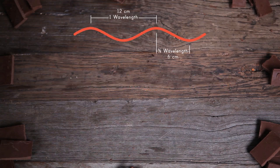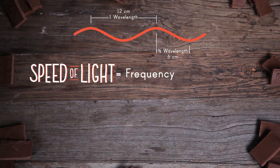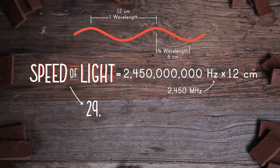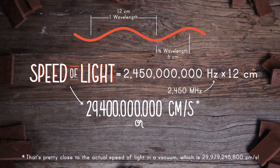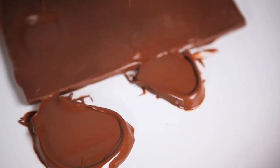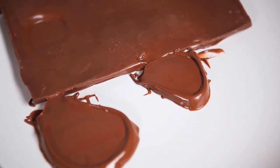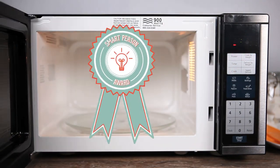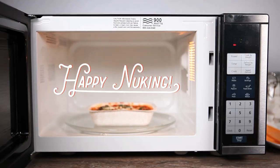Plug the frequency and the wavelength into the formula and calculate. This number should be pretty close to the speed of light, which is about 29 billion 400 million centimeters per second, or 294 million meters per second. Even if your friends don't want to eat these microwaved dishes, at the very least you'll impress them with your science skills. Happy nuking!